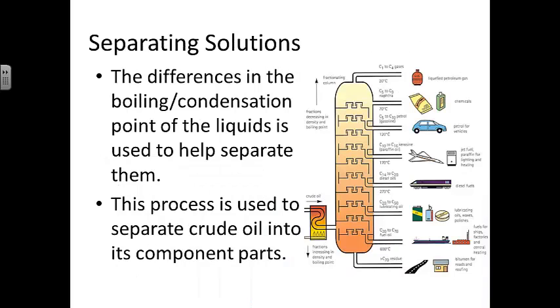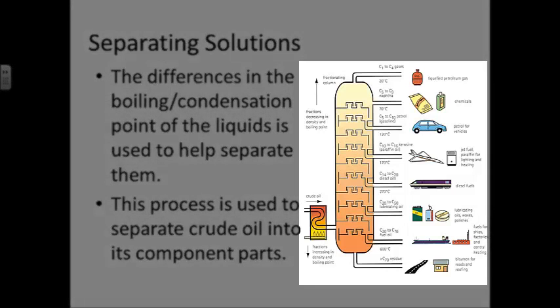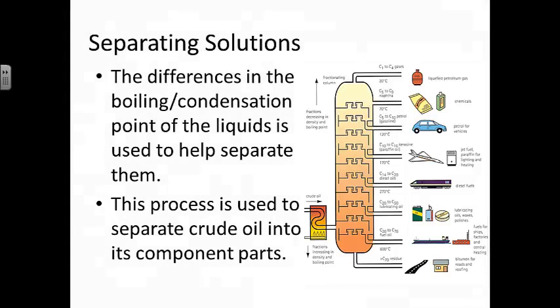This process is used to separate crude oil into all of its component parts, as shown in the diagram. The heaviest components settle out towards the bottom of the fractionating column, while those at the very top are smaller, more lightweight molecules that tend to be gases or become liquid only at much higher temperatures.